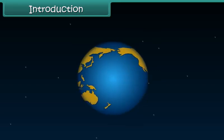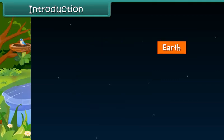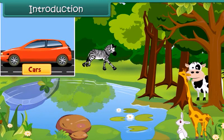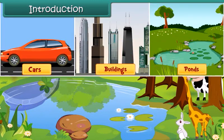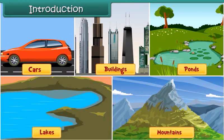we all live on a small blue planet called Earth. We see living things such as trees, animals, as well as non-living things like cars, buildings, ponds, lakes and mountains around us. All these things are found on our planet Earth. In this module, you will learn about the Earth and what it consists of.